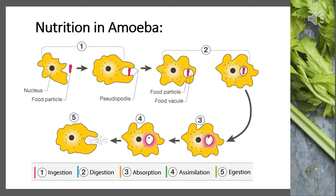Now let's look at the stepwise representation of nutrition in amoeba. In step one, a food particle is near and the amoeba ingests it by forming an arm or cup-like structure. If you see the figure, you will see the cup-like structure where it encircles the food — this is done with the help of pseudopodia, the false feet.